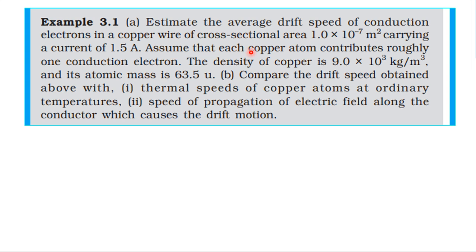Assume that each copper atom contributes roughly one conduction electron. The density of copper is 9 × 10³ kilogram per meter cube and its atomic mass is 63.5 atomic mass units.